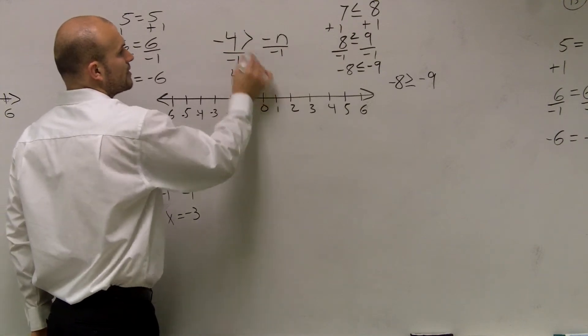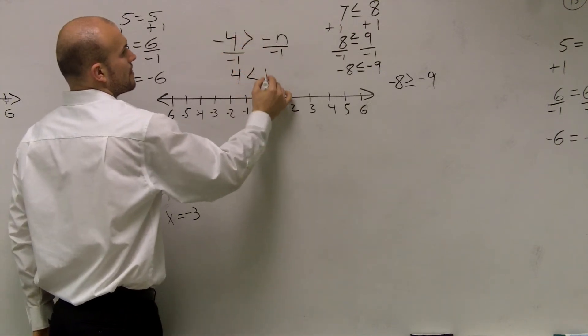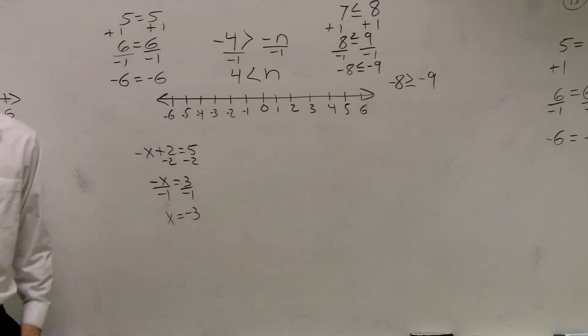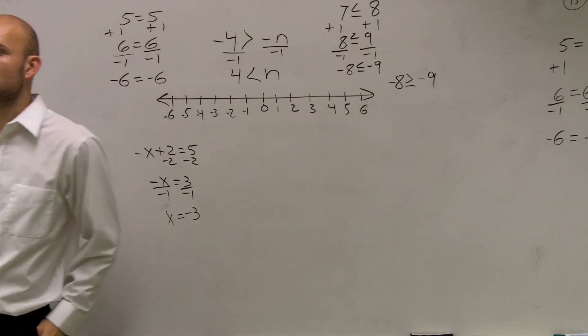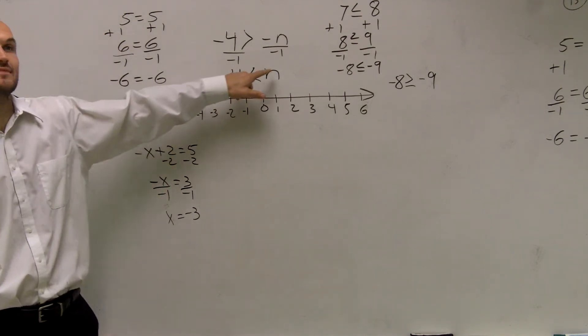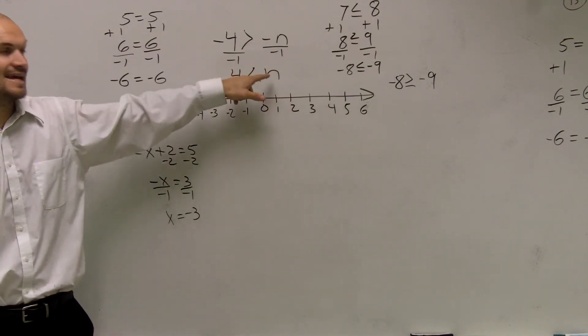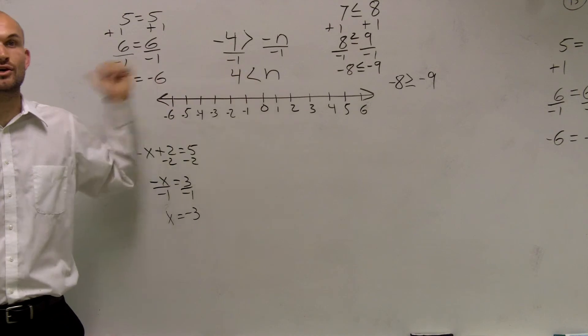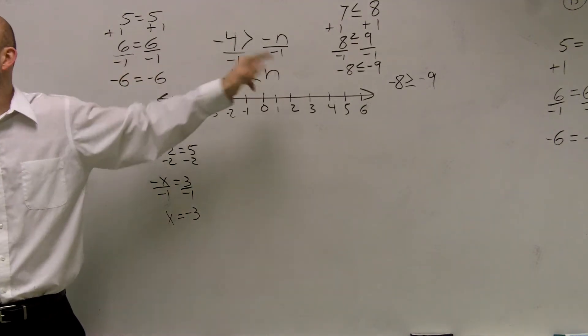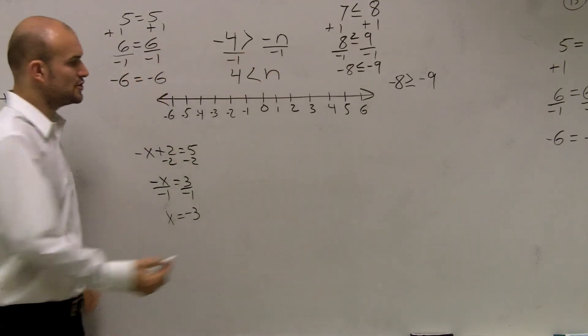Now I have a positive 4. Flip the sign. 4 is less than n. Now the one thing I notice is since my variable is on the right side, it's not on the left, I can't say wherever the inequality sign goes, that's where my line goes. That only works when your variable is on the left. So you could do it two ways.